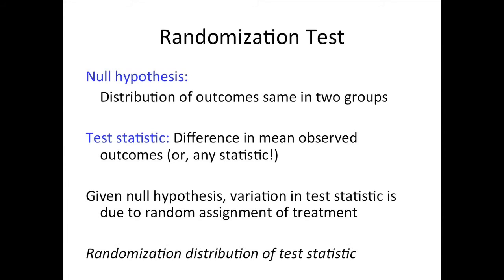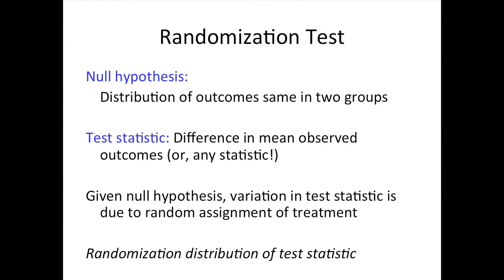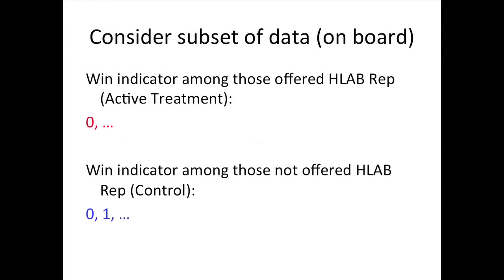I want to discuss this a little more, but I'm going to do it in the context of just a subset of the data. In reality, we had 207 people involved in this study — 207 people who were either offered help or not. But let's pretend we only had three, think about what we would do in that context, and then I'll show you what we got for the 207.